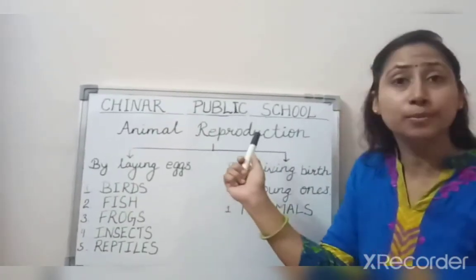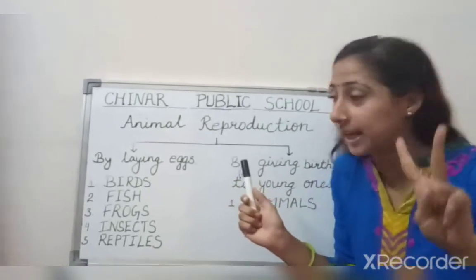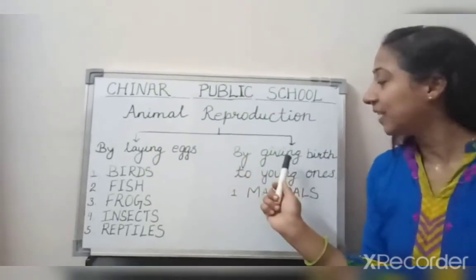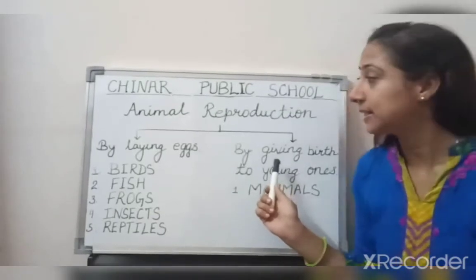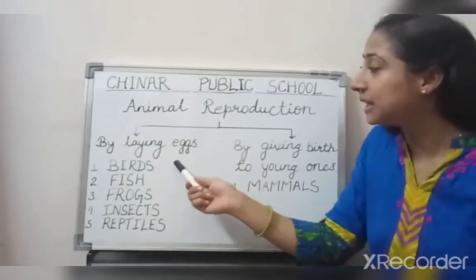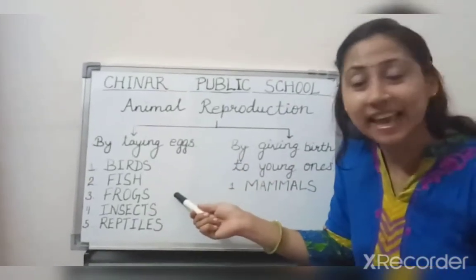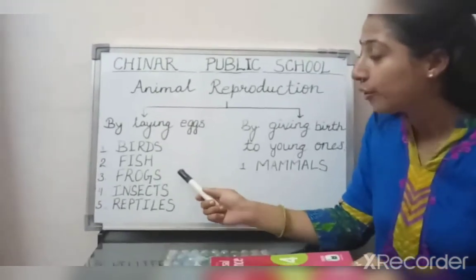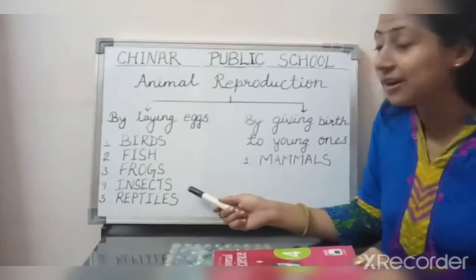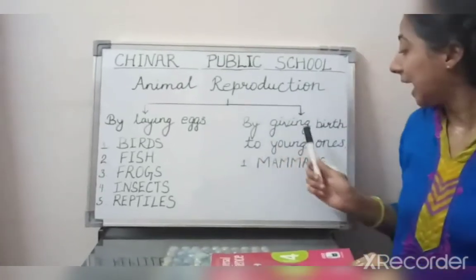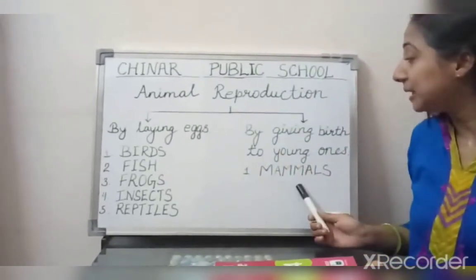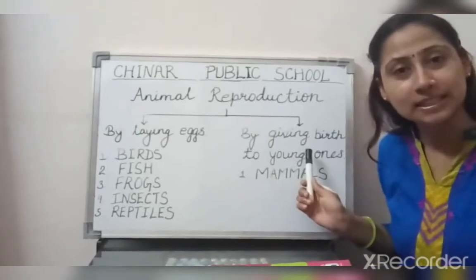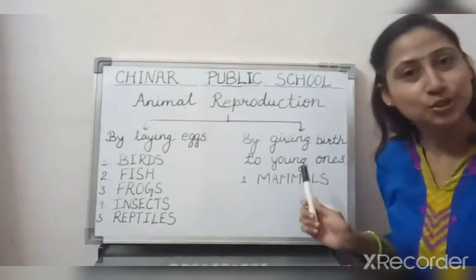How do animals reproduce? By two ways — by laying eggs and by giving birth to young ones. Which animals reproduce by laying eggs? Birds, fish, frogs, insects, and reptiles. And mammals give birth to young ones. Understood?